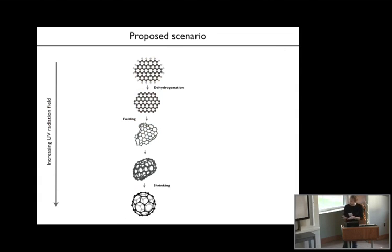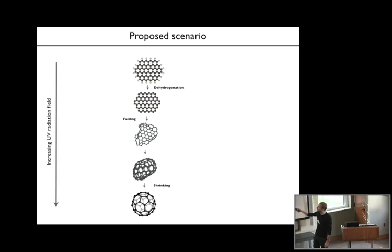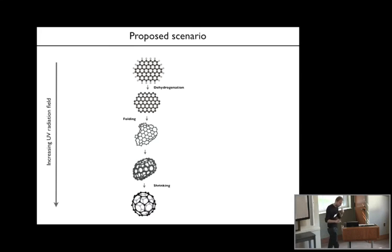The scenario we propose for the formation of C60 based on PAHs is the following: first you start with your PAH molecule, which you dehydrogenate and form a sort of mini graphene flake or nano-flake—a dehydrogenated PAH. Then this flake will fold when you give it more energy provided by UV photons. It will fold and eventually close into a cage, and then this cage can shrink and reach the C60 island of stability.